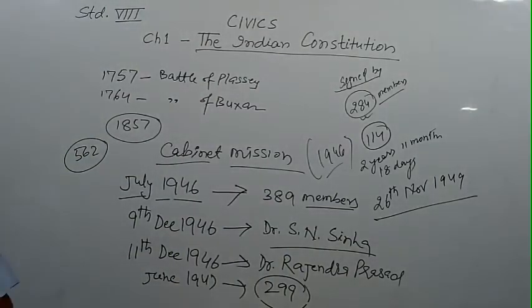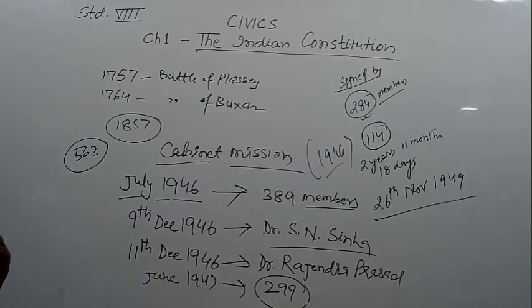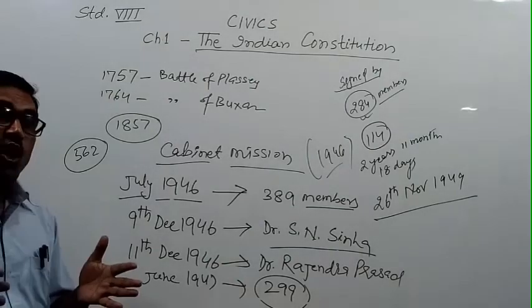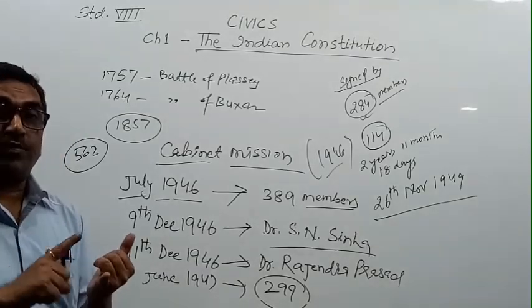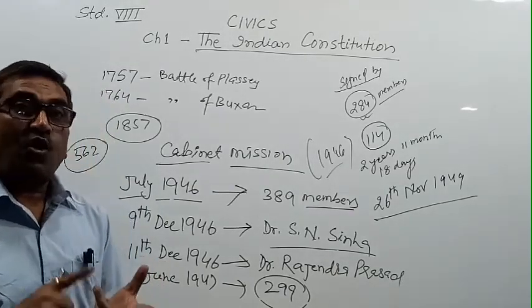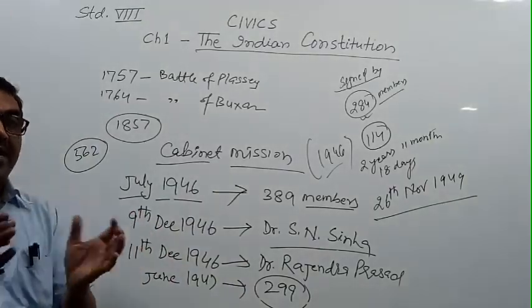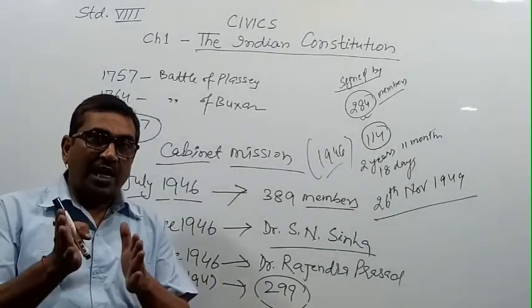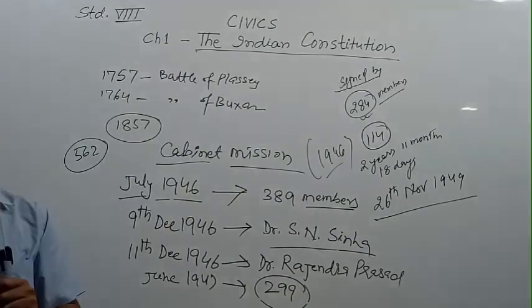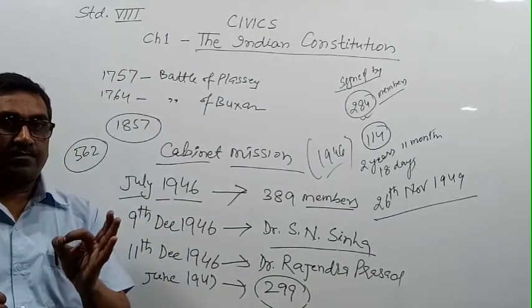The Constituent Assembly had many committees. Among the most important was the drafting committee, chaired by Dr. B. R. Ambedkar. They held 114 meetings and the process lasted 2 years, 11 months and 18 days. The constitution was completed on 26th November 1949. They took help from the constitutions of different countries including USA, UK, Russia, France, Germany, and Australia, incorporating the best features from each. In the next class, we will discuss the features of the Indian constitution.